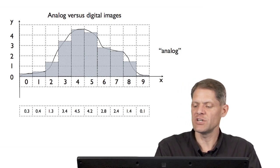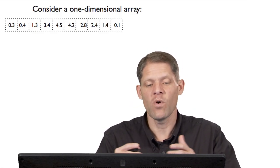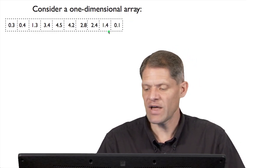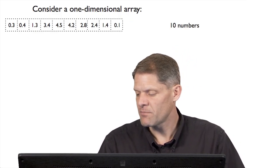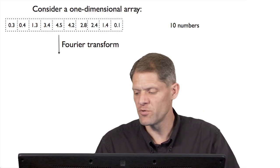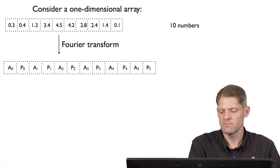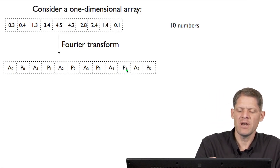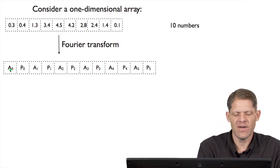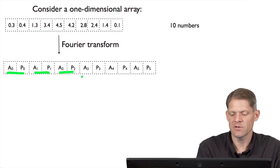Our digital image will just be a series of 10 discrete numbers. Let's think about that digital image — it's a one-dimensional array with 10 values. With 10 numbers, we can calculate its Fourier transform. If we send that array to a Fourier transform routine in the computer, it will return very nearly the same number of values: 10 numbers plus 2 extra, which I'll talk more about. What it sends back from the Fourier transform routine is a series of amplitudes and phases, listed as A and P.